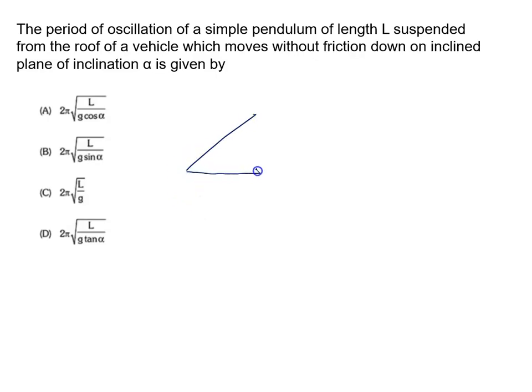Suppose this is an inclined plane and the angle of inclination is alpha. This is a vehicle, the situation is like this, which moves down without friction. This is a smooth surface.